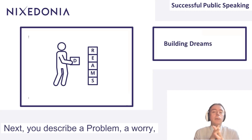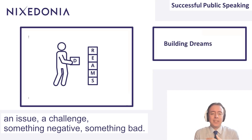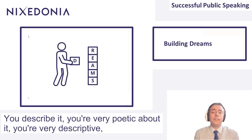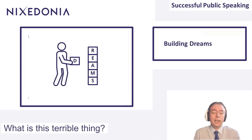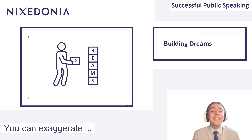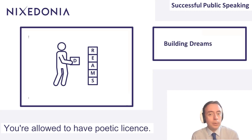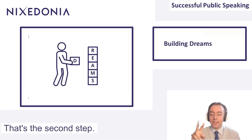Next, you describe a problem — a worry, an issue, a challenge, something negative, something bad. You describe it. You're very poetic about it, very descriptive, and people will listen to you. They're interested: what's this problem? What is this terrible thing? You can exaggerate it. You're allowed to have poetic license. That's the second step.